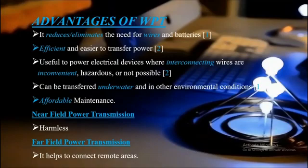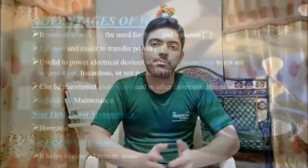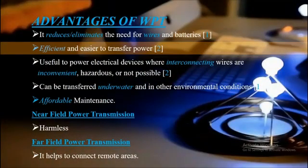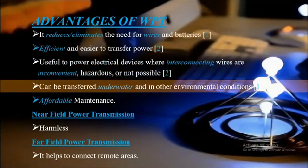Let's move towards our final phase: why do we need all this? Starting with the advantages of WPT — it reduces, or I can say eliminates, the use of wires and physical links, thus no expense of copper or wire. It is efficient and easier to transfer power; by efficient, I mean there is less loss of power. In our current power transmission system, about 50 to 60 percent of electricity is lost during transmission due to wires and high distances. It is also useful to power devices where connection of wires is hazardous or difficult.